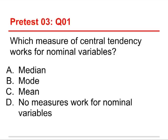The first question is: which measure of central tendency works for nominal variables? The choices are the median, the mode, the mean, or that no measures work for nominal variables. The answer to this one is the mode. If you have a nominal variable, that simply means that you have different names or different categories. You can still say which category is the most common, which one is the most frequent, and that would be the mode.